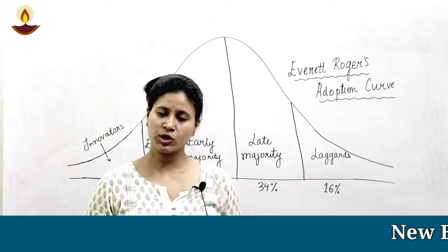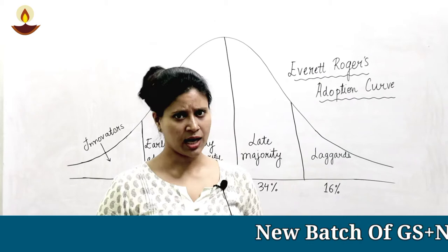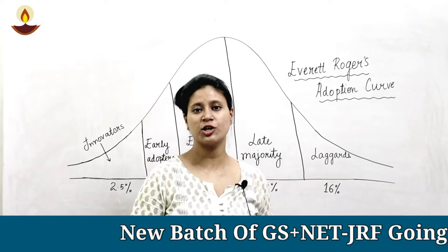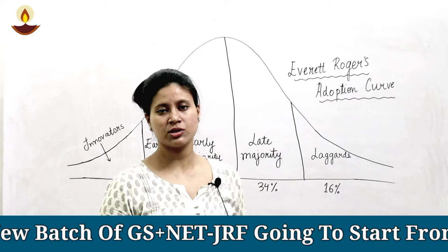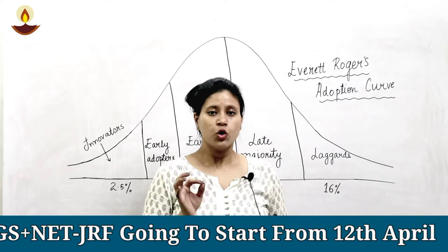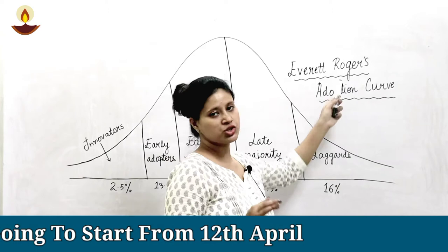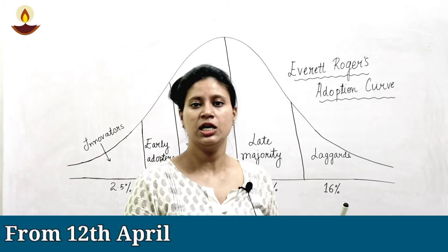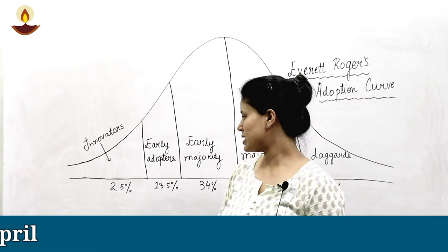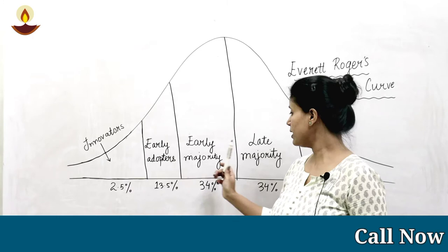This topic is important for both management students as well as commerce students. So without wasting time, let's get started. As the name suggests, this adoption curve shows the rate at which the consumer adopts any new product or any innovation. This concept was given by Everett Rogers. It is also called Rogers' Bell Curve. There are five main elements: Innovators, Early Adopters, Early Majority, Late Majority, and Laggers.